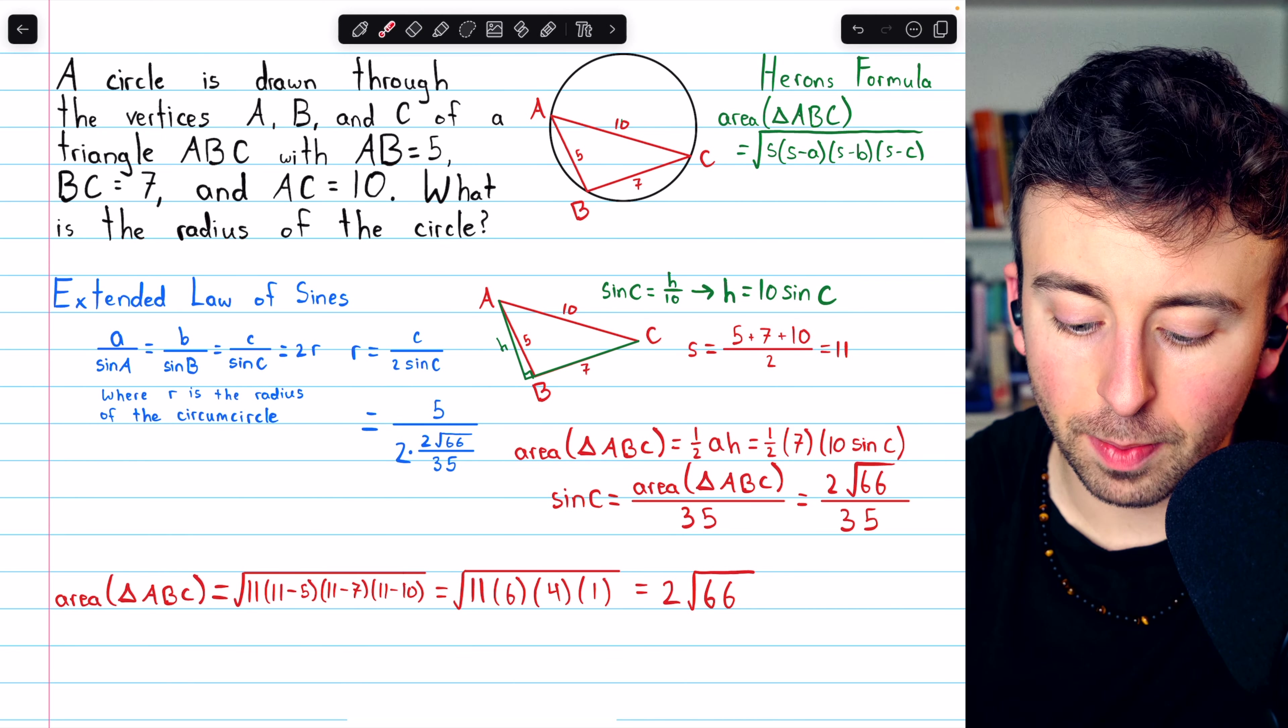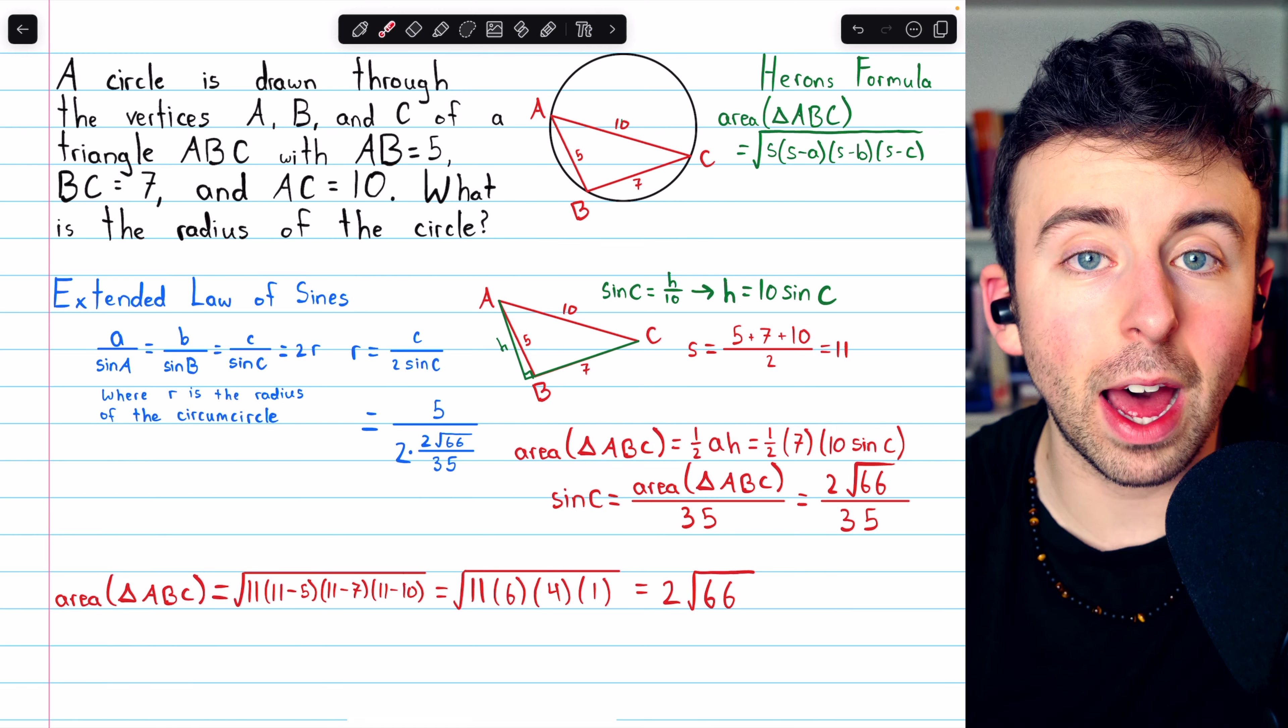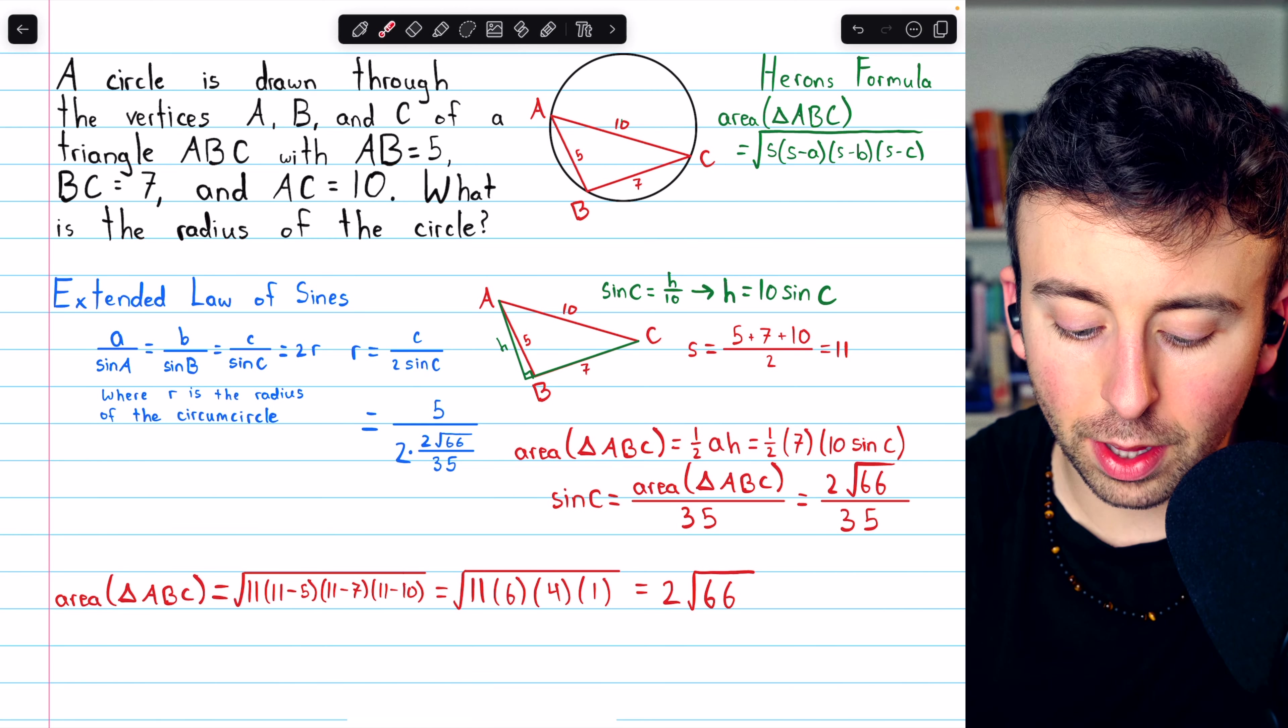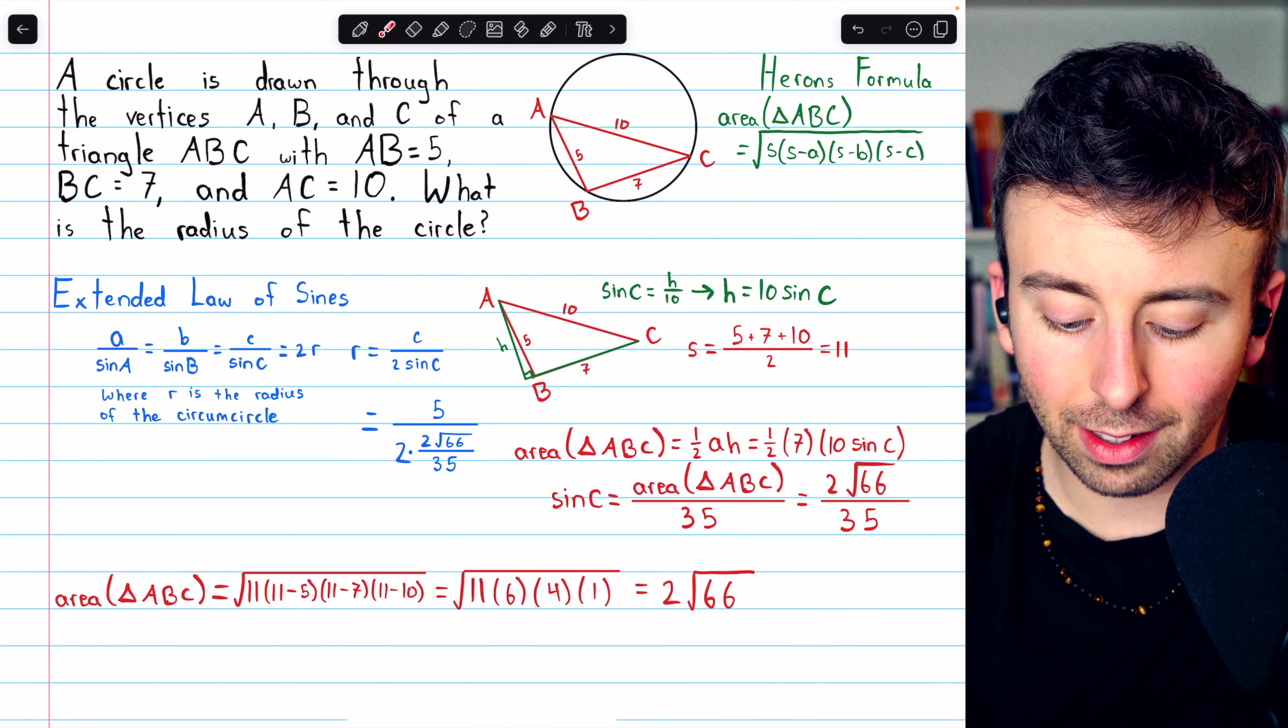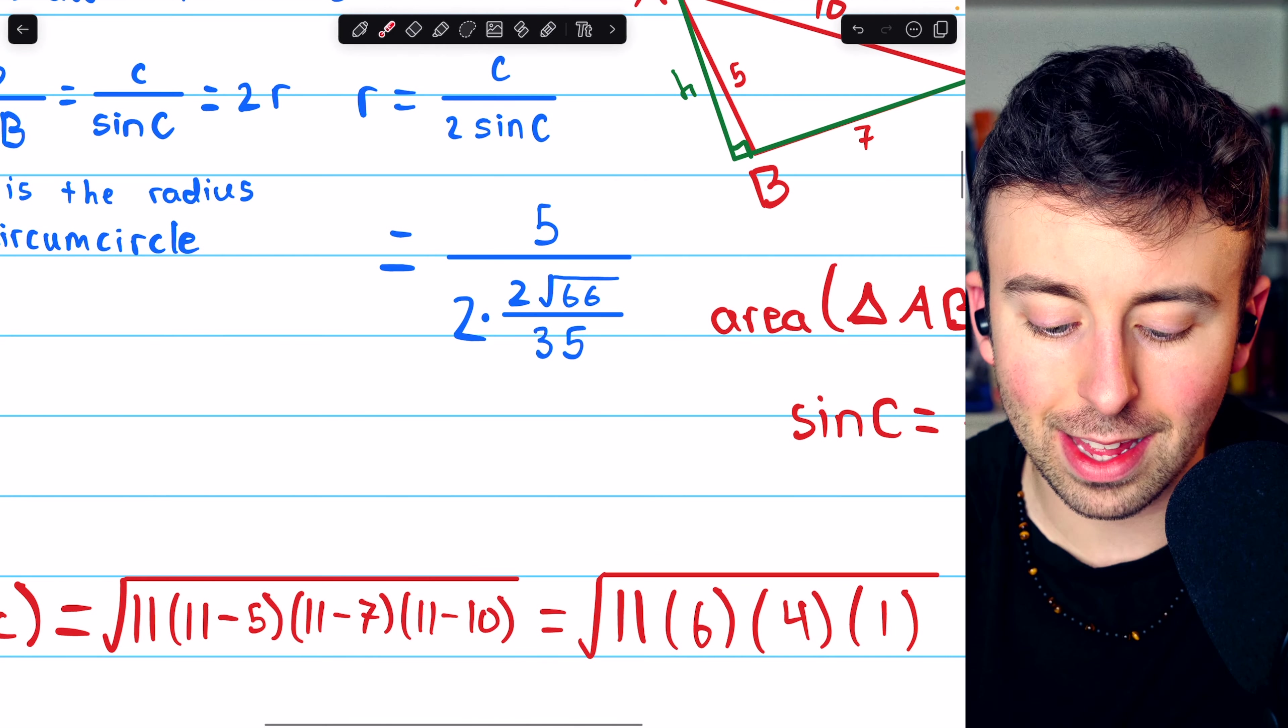The numerator, little c, is the side length opposite angle C, and we know that is 5. In the denominator, we have 2 times sine C. So there's the 2. And then sine C, we know, is 2 root 66 over 35. Now let's just go ahead and simplify this expression.